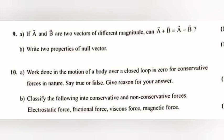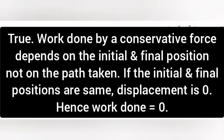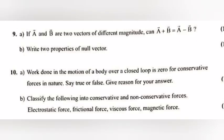Question 10a: Work done in the motion of a body over a closed loop is 0 for conservative forces in nature. Say true or false. Give reason for your answer. Answer: True. Work done by a conservative force depends on the initial and final position, not on the path taken. If the initial and final position are same, displacement is 0. Hence, work done is equal to 0.